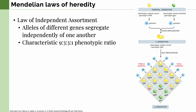The result shows the characteristic 9:3:3:1 phenotypic ratio. Nine offspring have both dominant alleles — yellow and round. Three have the dominant yellow allele but the recessive wrinkled allele. Another three have the dominant round allele but the recessive green allele. And finally, only one has both recessive alleles — green and wrinkled — at the bottom of the Punnett square.